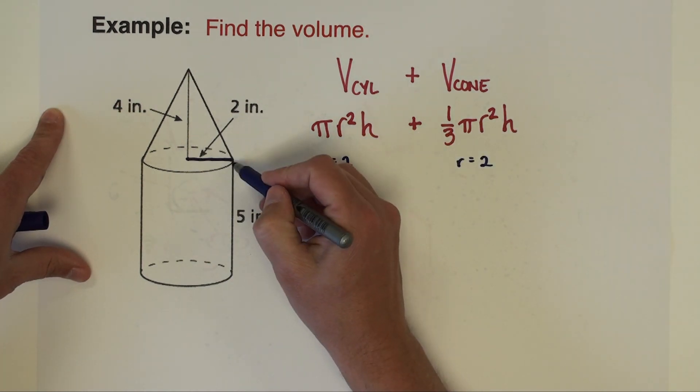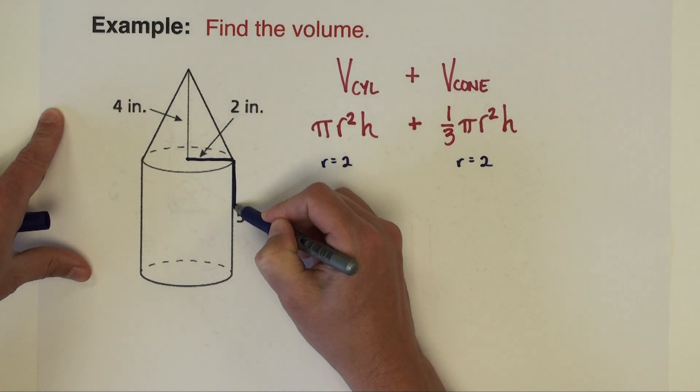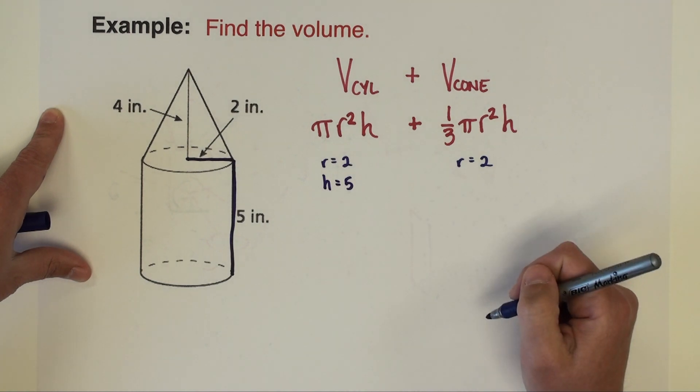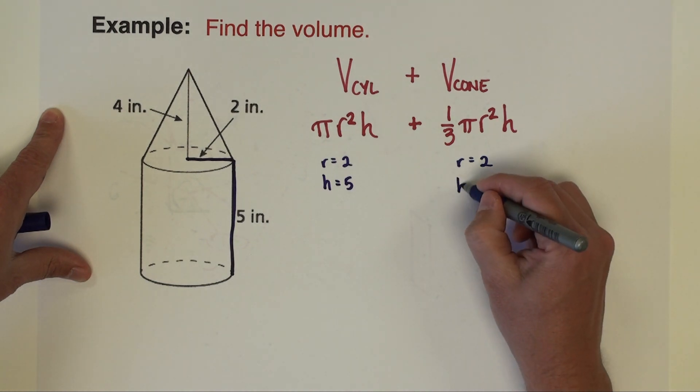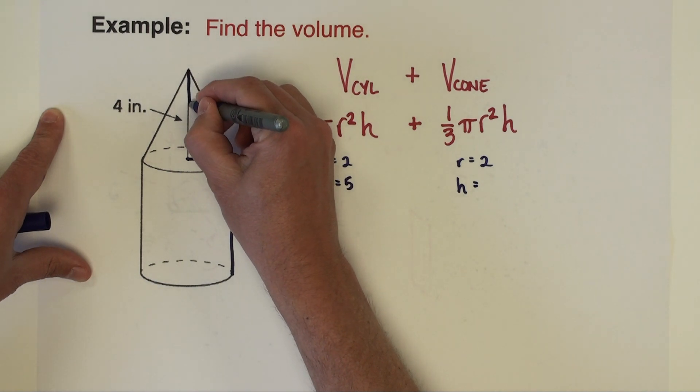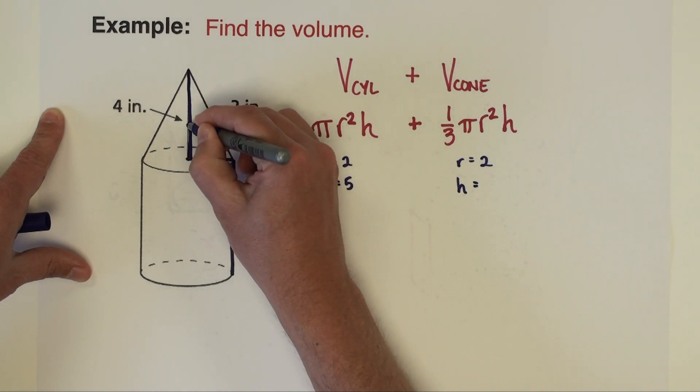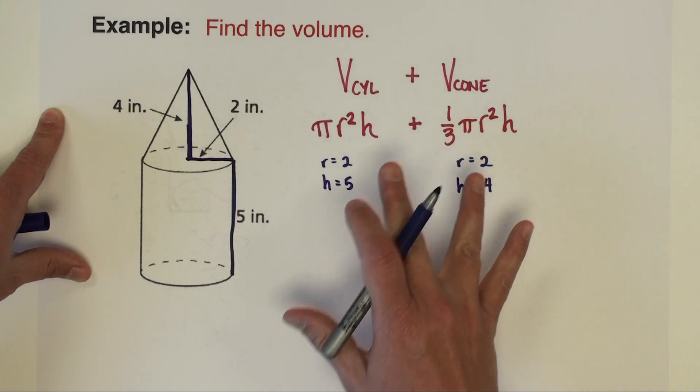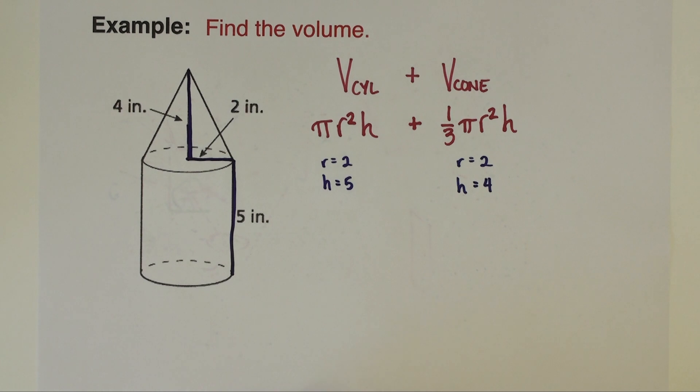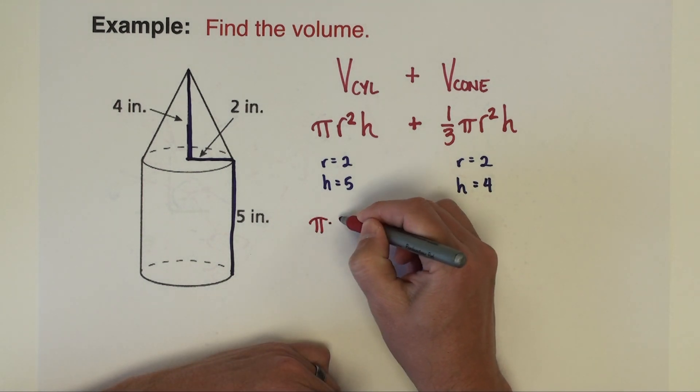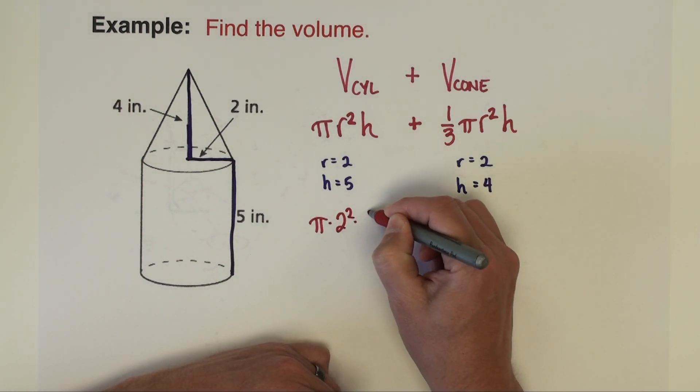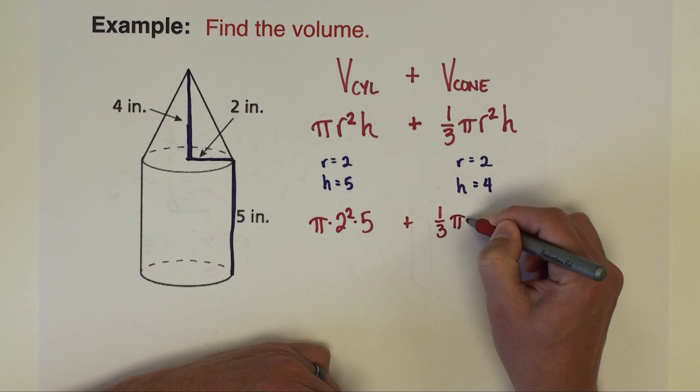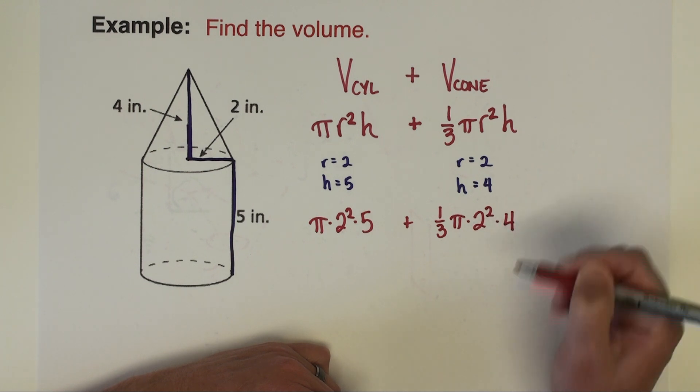Where it's different though is the height. Here I've got the height of the cylinder and that height is 5, whereas when I look at the cone, the height of this cone happens to be 4. So we have to make sure we put the correct numbers into the correct spots, the correct variables, and just pay close attention. We have pi times 2 squared times 5 plus one-third pi times 2 squared times 4.